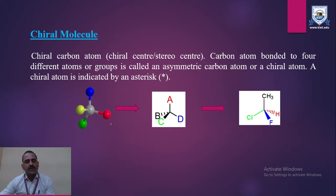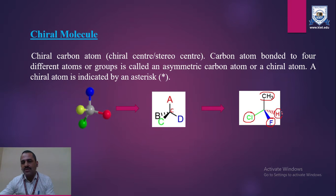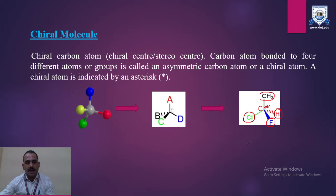Here we have a pictorial representation showing the chiral molecule. A, B, C, and D are the four different substituents lying on the central carbon. Here we have a good example where methyl, chloro, fluoro, and hydrogen substituents are part of this chiral carbon C, which is shown here with the help of an asterisk mark.